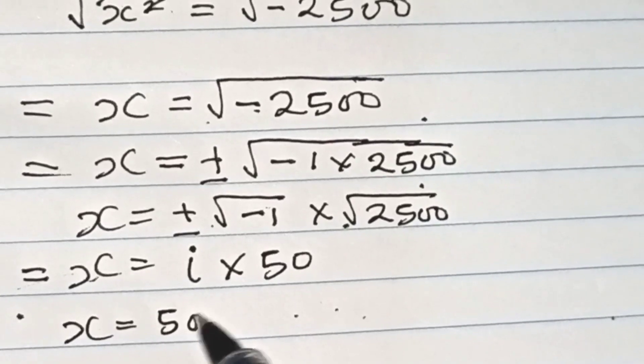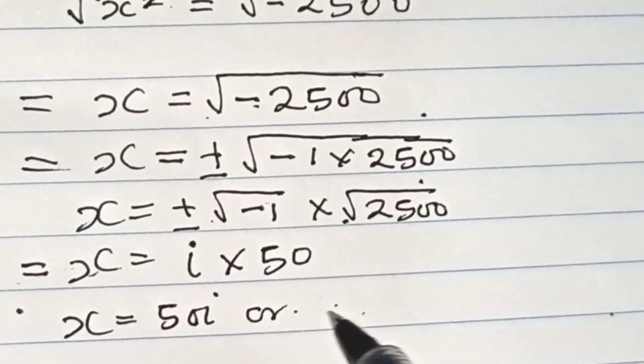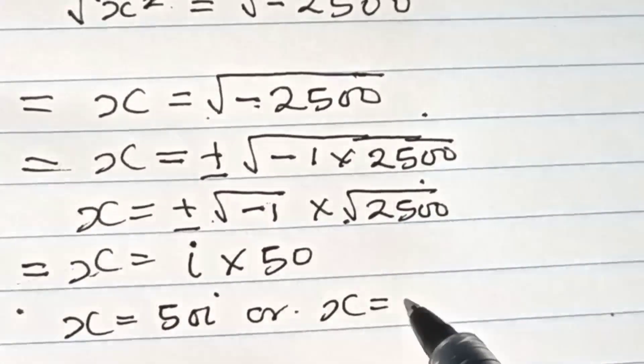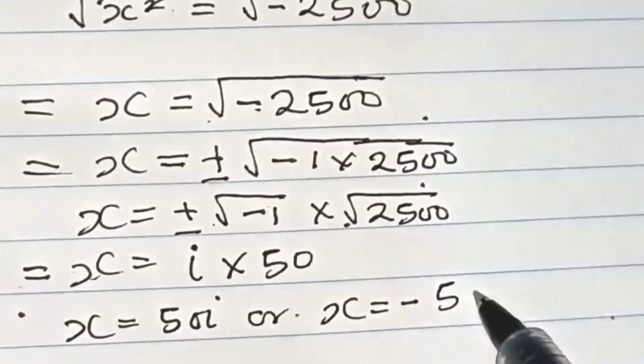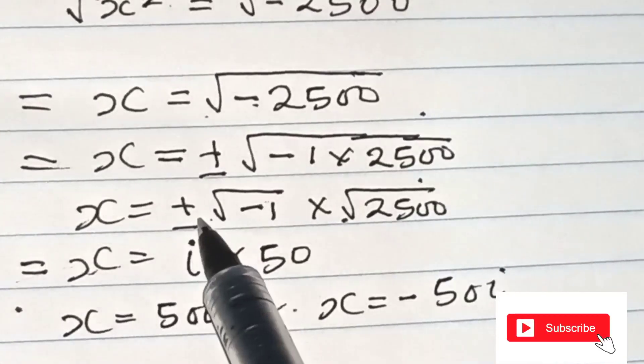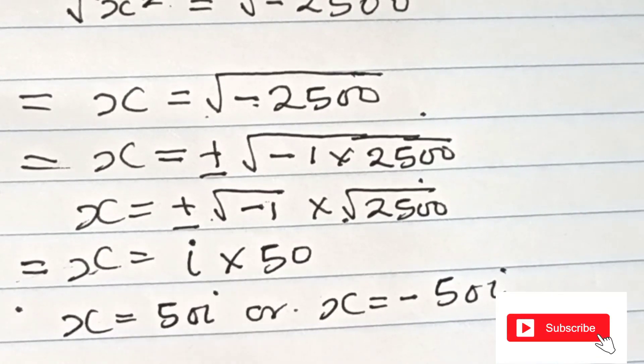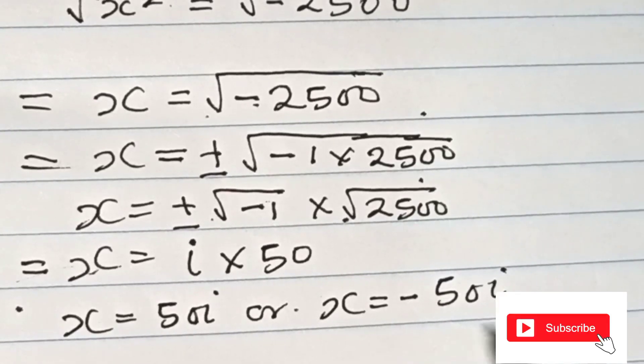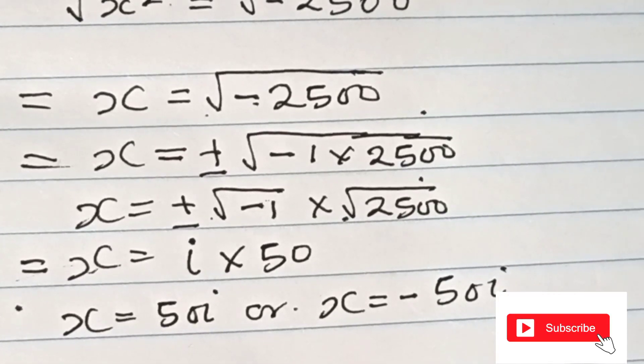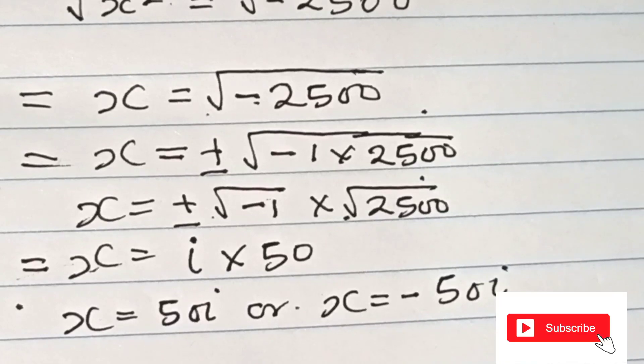X equals 50i or X equals negative 50i. This is the final solution. Thank you for watching. Don't forget to subscribe to the channel for more videos like this.